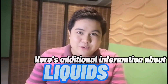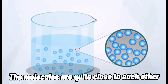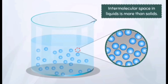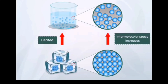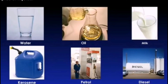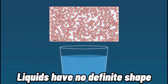Here's additional information about liquids. Liquids occupy a definite space, but they don't have any fixed shape. The molecules of a liquid substance are quite close to each other but have a considerable amount of intermolecular space between them — more than the space present between molecules of a solid. If a block of ice is heated, the space between its molecules increases, causing it to change into water. Water, oil, milk, kerosene, petrol, and diesel are examples of liquids. Because of weak intermolecular forces, liquids have no definite shape of their own — they take the shape of their containers. Liquids have a definite volume.